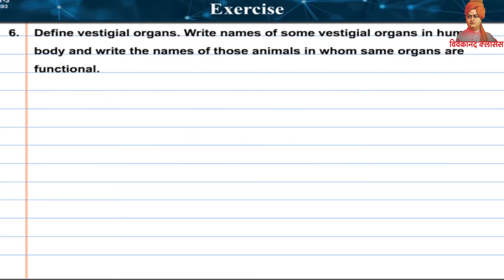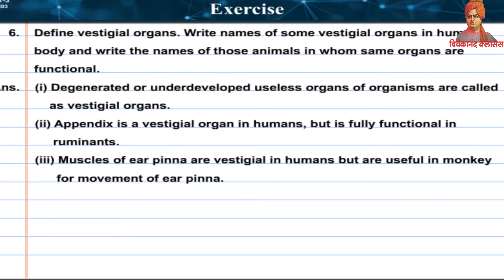Question 6: Define vestigial organs, write names of some vestigial organs in the human body, and write the names of animals in whom those same organs are functioning. Degenerated or underdeveloped useless organs of organisms are called vestigial organs. The appendix is vestigial in humans but fully functional in ruminants. Muscles of the ear pinna are vestigial in humans but are useful in monkeys for movement of the ear pinna.